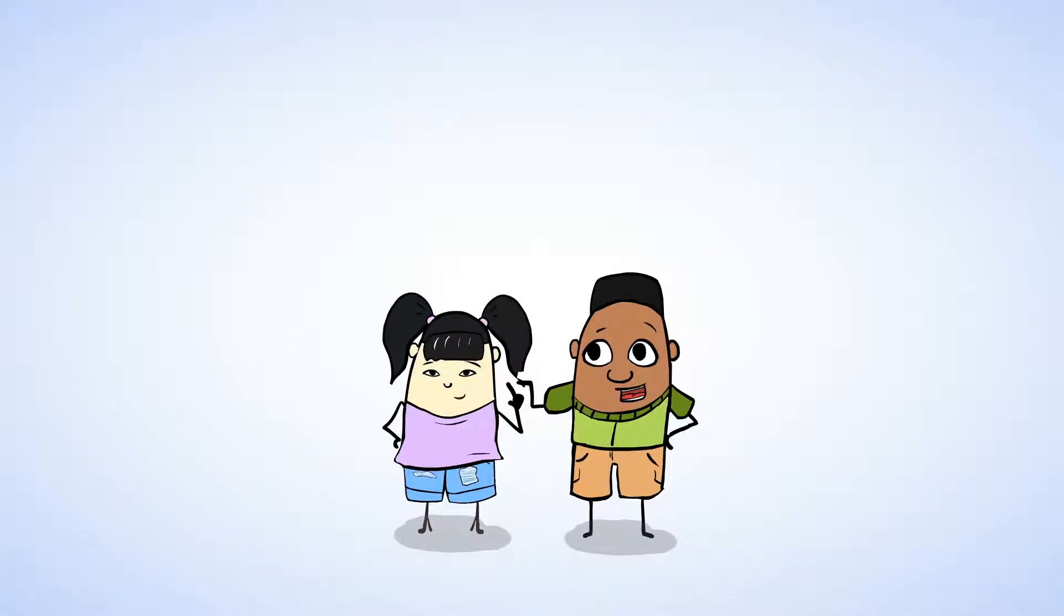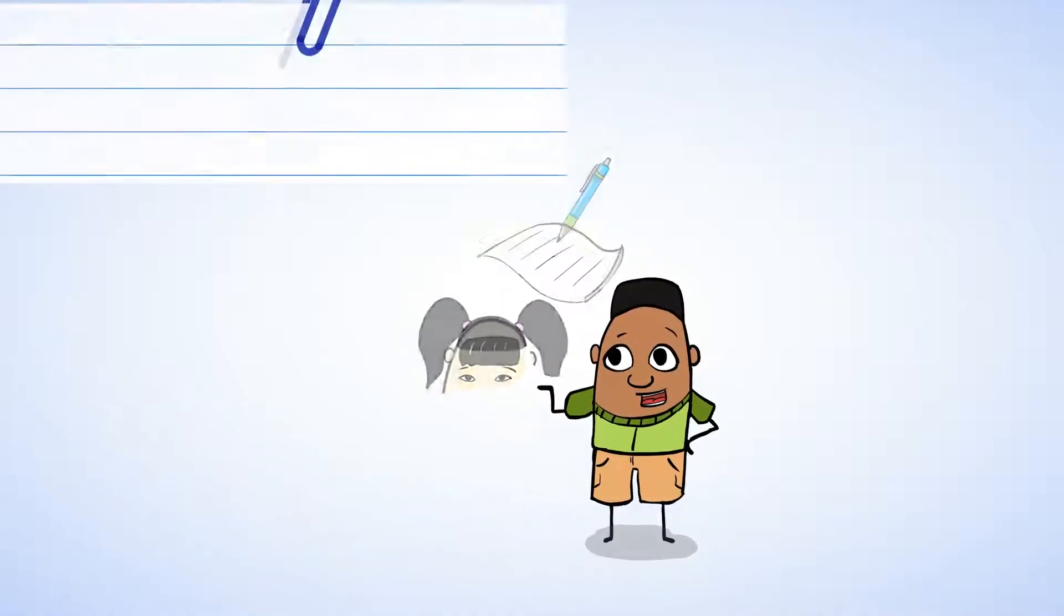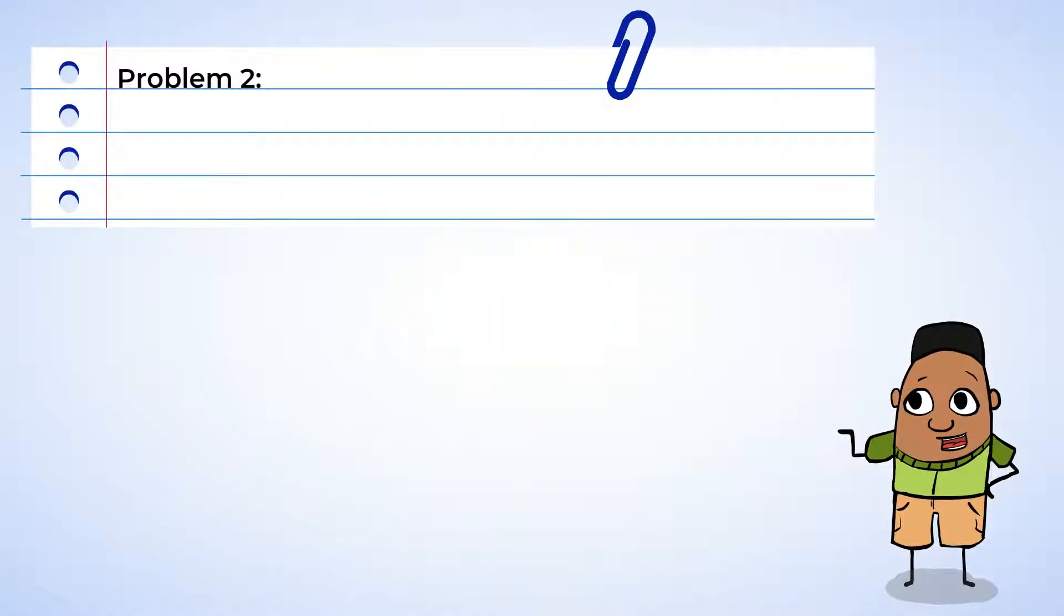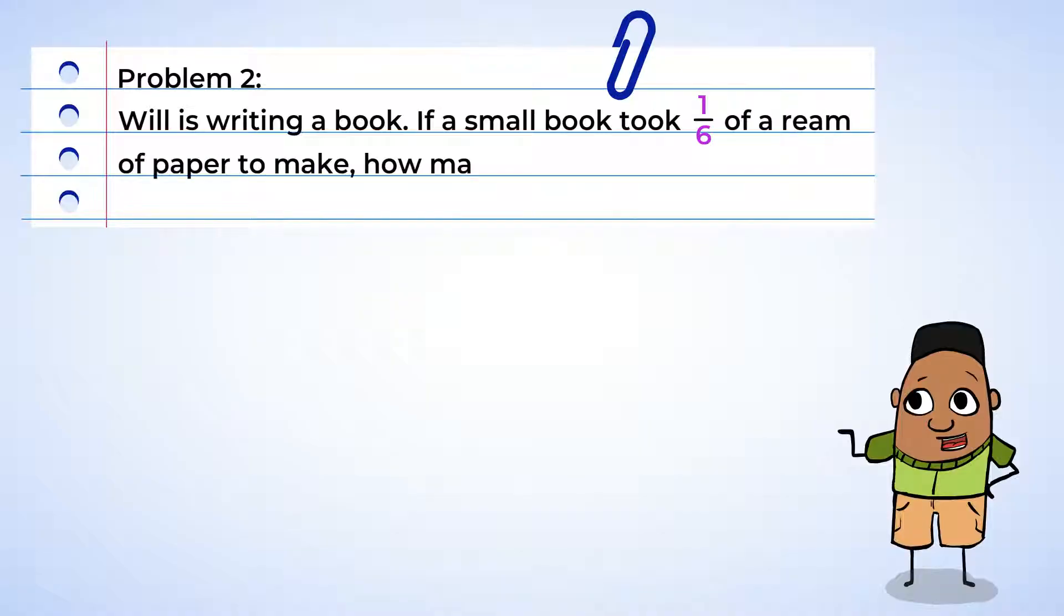And who have we got here? It's Will and Sue, and they're working on writing an adventure story for their writing class. Let's see if we can help them out. Will is writing a book. If a small book took one-sixth of a ream of paper to make, how many books could Will make with two whole reams of paper?